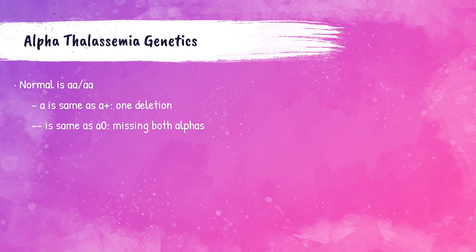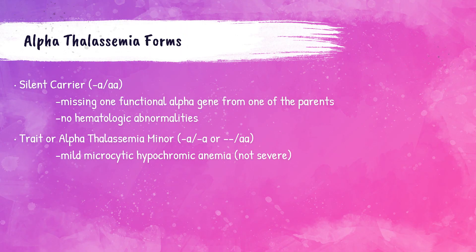A normal person with normal alpha genes is denoted as aa/aa. A dash followed by 'a' represents one deletion of an alpha gene, equivalent to alpha plus. Dash-dash represents two deletions of alpha genes, equivalent to alpha zero. The silent carrier for alpha thalassemia is -a/aa — one deletion — so this patient has three normal alpha genes and has no hematological abnormalities.